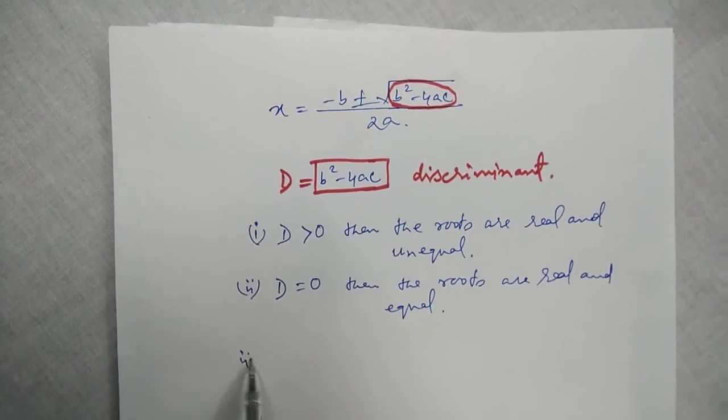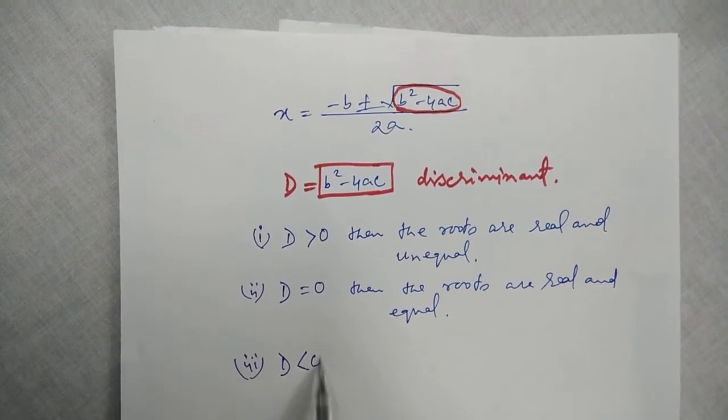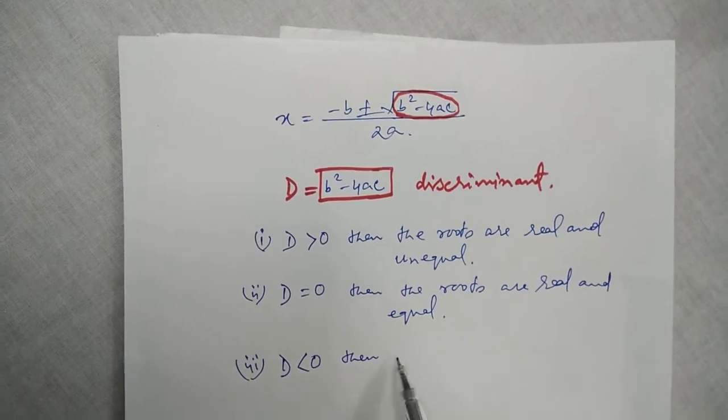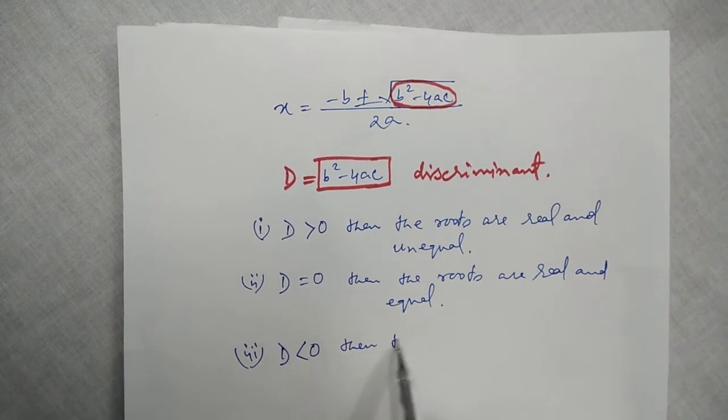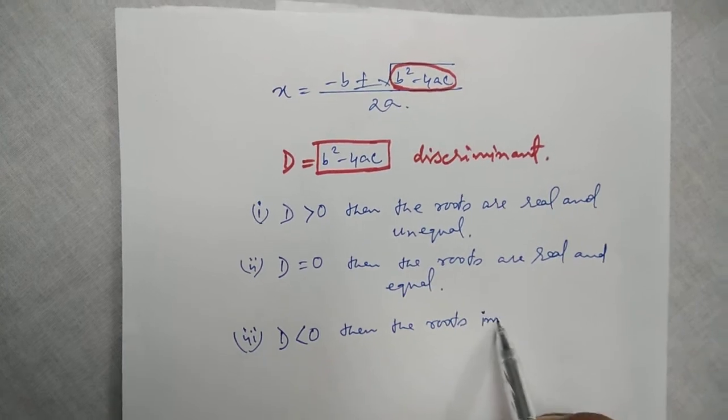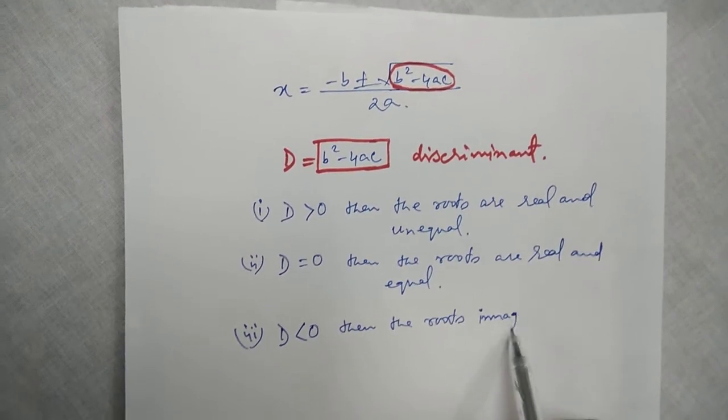And thirdly, if D is negative, less than 0, then we do not get any real roots. Then the roots are unreal or we can say imaginary.